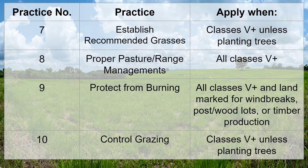Practice number seven: establish recommended grasses. Apply when you're on class five and higher land, unless you're planting trees. You plant trees when you're using wind breaks, post or wood lots, or timber production, and those three things will be marked if the land is supposed to be used for those things.